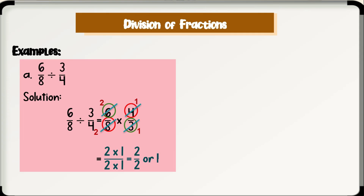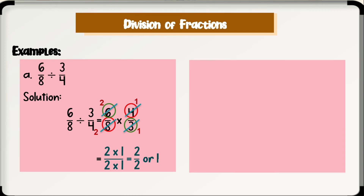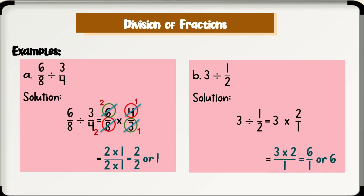Therefore, 6 over 8 divided by 3 over 4 is equal to 1. Letter B: 3 divided by 1 half. Solution: get the reciprocal of the divisor, then change the operation from division to multiplication. We have 3 divided by 1 half — it becomes 3 times 2 over 1. No need to cancel. Simply multiply: 3 times 2 over 1 is equal to 6 over 1, or simply 6. Therefore, 3 divided by 1 half is equal to 6.